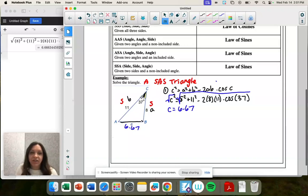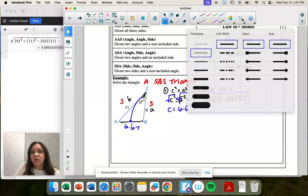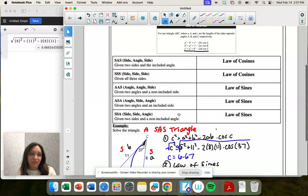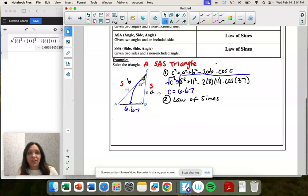So C is 6.67. And now what happens is, look, I have an angle with a matching side. I didn't have that before. So now we're going to jump to something. Well, something that we know we're going to jump to law of sines. It's actually way easier to use law of sines than law of cosines. So now we are going to use law of sines and get angle A or B. Doesn't matter. Let's do A.